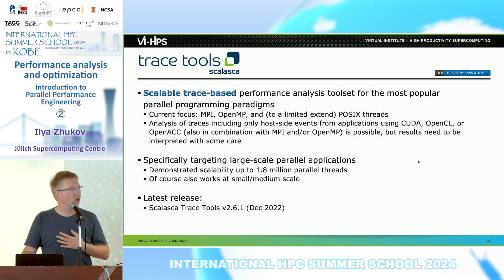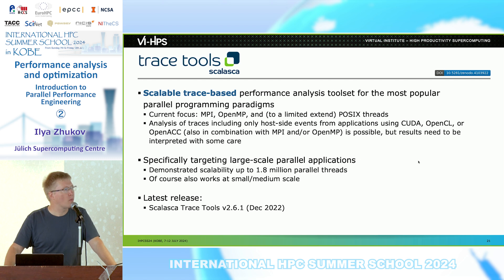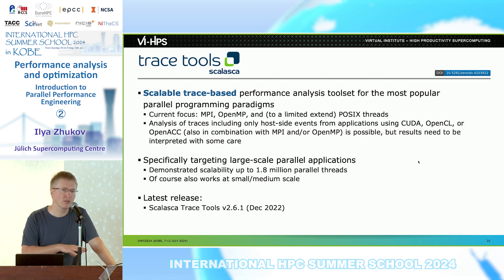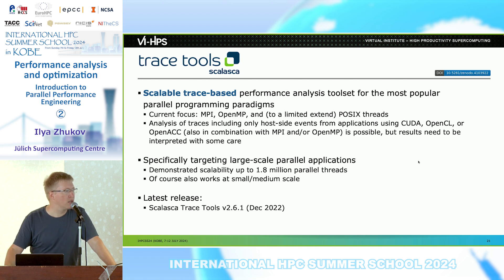For this, there is another tool called Scalasca, a trace-based tool. It's a performance analysis toolset for the most popular parallel programming paradigms. It's open source, supports MPI, OpenMP, and to some extent POSIX threads. It does not support GPU-related events or memory-related events. Scalasca is more for communication patterns and efficiency identification, and it's targeted for large-scale parallel applications. It was demonstrated to scale up to 1.8 million parallel threads.